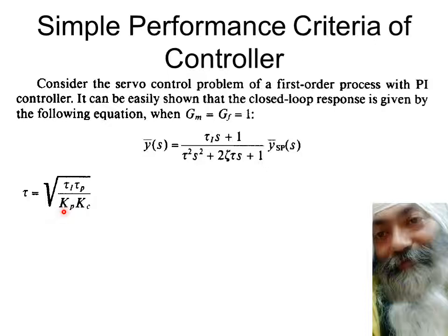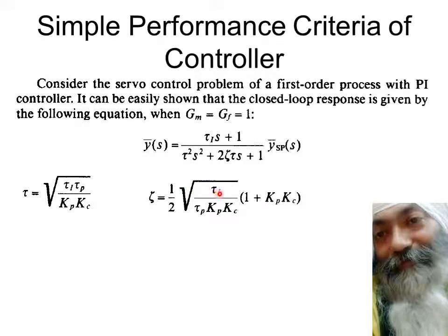The value of tau (the second-order time constant) is given by the square root of (tau_i · tau_p) / (kp · kc), where kc is the proportional gain, kc/tau_i is the gain of the integral term, tau_p is the original time constant of the process, and kp is the gain (sensitivity) of the first-order process. The damping factor zeta is given by (1/2) · sqrt(tau_i / (tau_p · kp · kc)) · (1 + kp · kc). We know tau and zeta; our target is to set the decay ratio equal to 1/4.